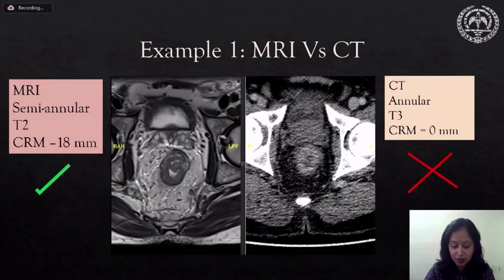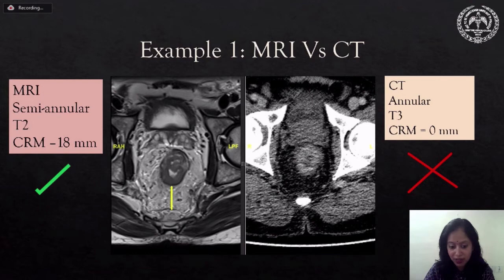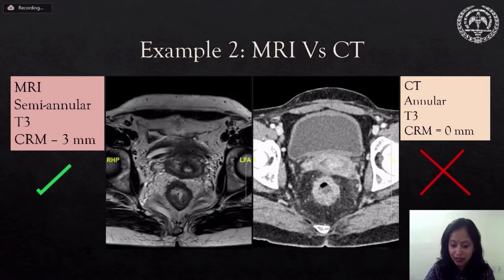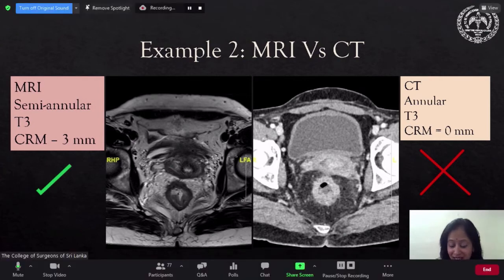CT can overestimate staging compared to MRI. A posterior semiannular T2 stage growth with an intact muscularis can be mistaken for a T3 annular growth on CT. Similarly, the CRM measured along the pushing margin of the tumor, which is at least 18 mm, can be read as 0 mm if CT is used for staging. A T3 stage anterior semiannular growth with a CRM of 3 mm can be mistaken as annular with no CRM on CT. Importantly, a T4 stage rectal cancer can be under-staged on CT.